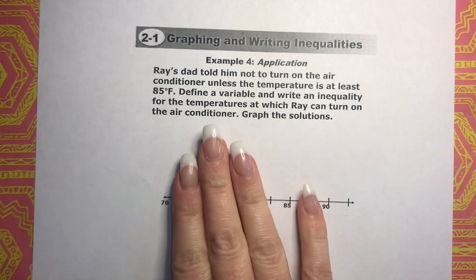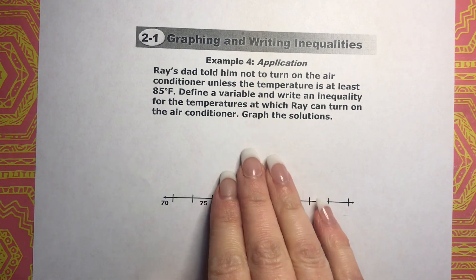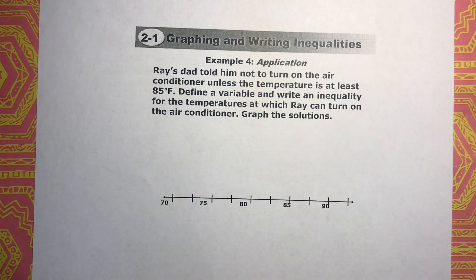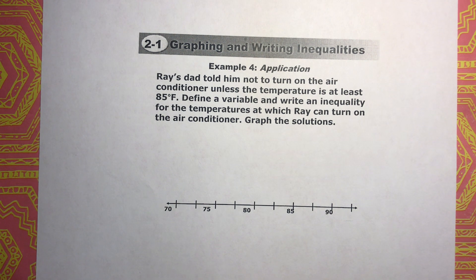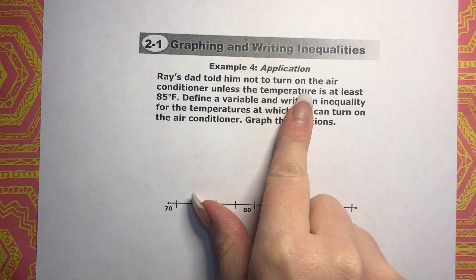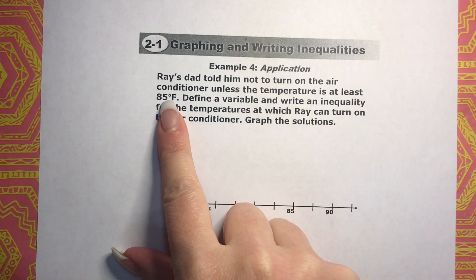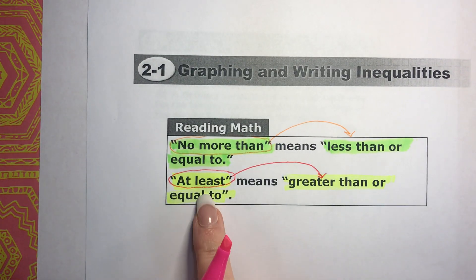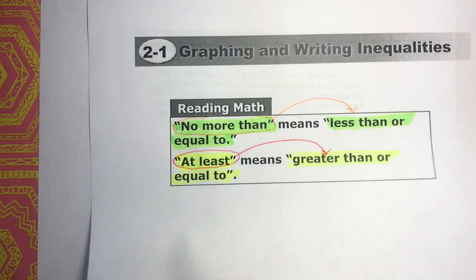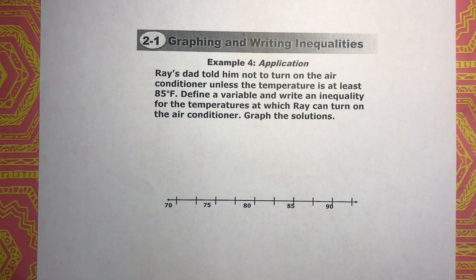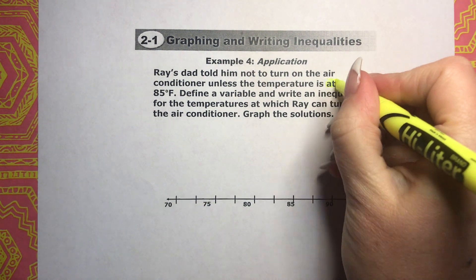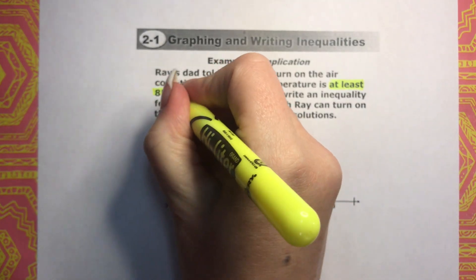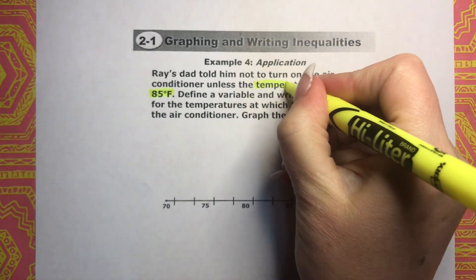Whenever I'm reading this, I want to look for key information and what they're asking me to do. So let's identify the key information. Ray's dad told him not to turn on the air conditioner unless the temperature is at least 85 degrees. 'At least' is one of those keywords we just talked about — we know that means greater than or equal to. The number is 85 degrees, and we're talking about temperature.